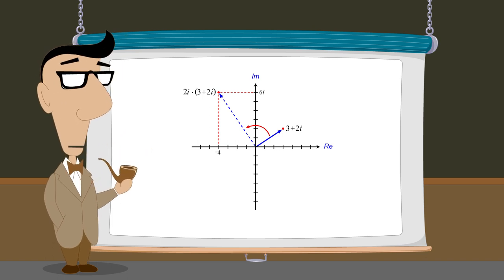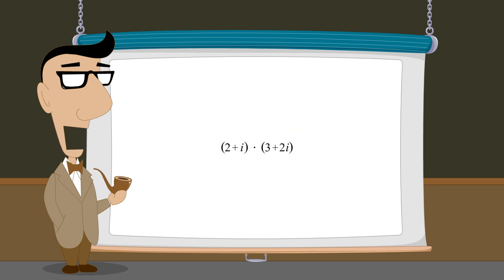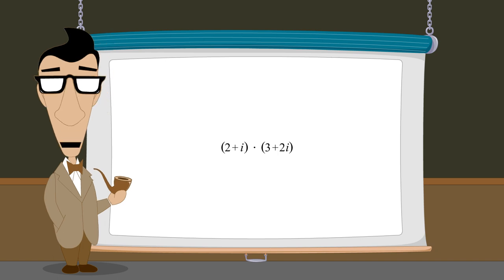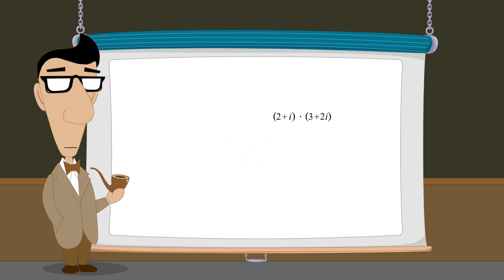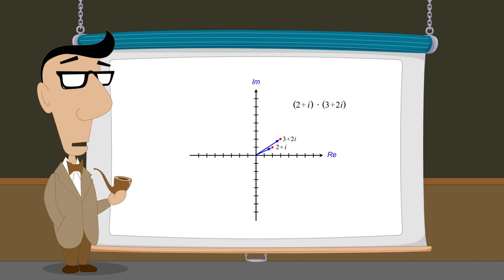So at this point we should have everything we need to know in order to multiply two complex numbers together — for example, 2 plus i times 3 plus 2i. We will start by showing how the numbers are multiplied algebraically using the distributive property, and then we will see how this multiplication can be graphically visualized using vectors.